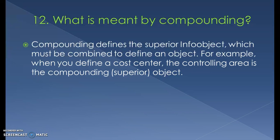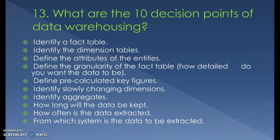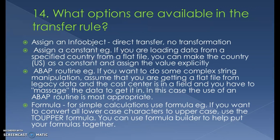What are the key decision points of data modeling? There are ten: identify the fact table; identify the dimension tables; define the attributes of the entities; define the granularity of the fact tables; define pre-calculated key figures; identify slowly changing dimensions; identify aggregates; determine how long data will be kept; determine how often data is extracted; and determine from which system the data is to be extracted.